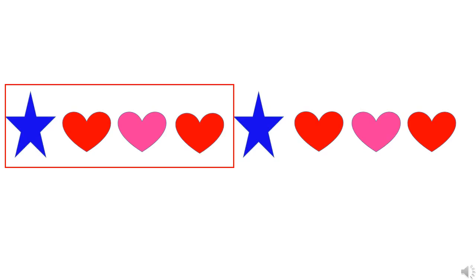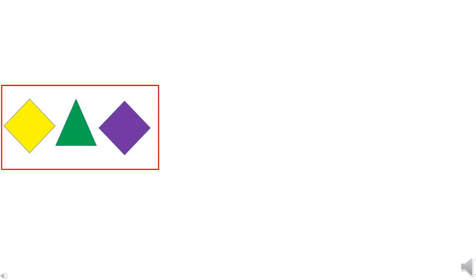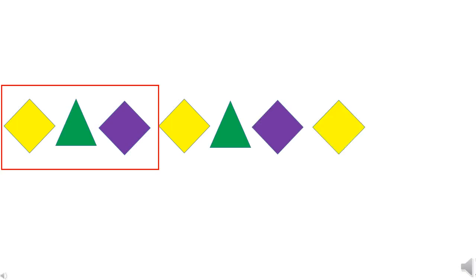Now let's look at one more pattern with colors. Here I have yellow diamond, then green triangle and purple diamond. This is going to be our sequence, arranged again and again. What will come after purple diamond? Yes — yellow diamond. And after yellow diamond? Green triangle. After green triangle? Purple diamond. After purple diamond? Yellow diamond. And after yellow diamond — not purple diamond or purple triangle, but green triangle. And after green triangle, last comes purple diamond again.